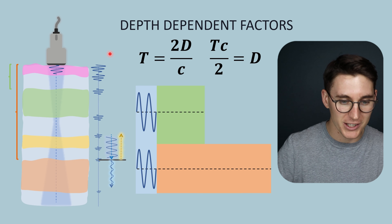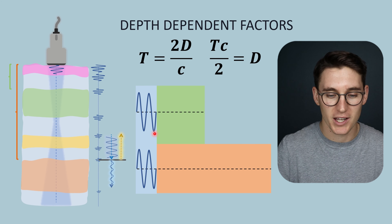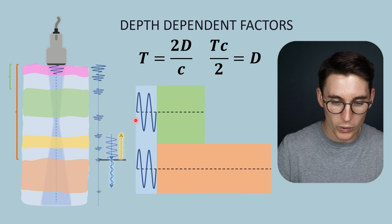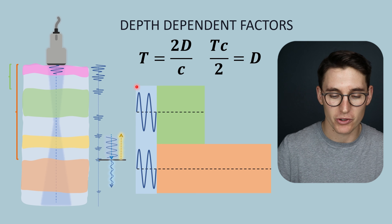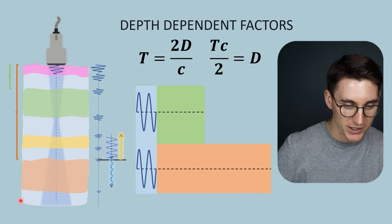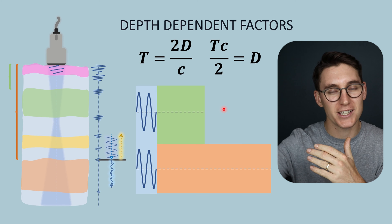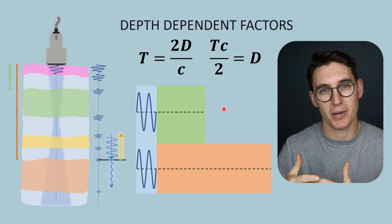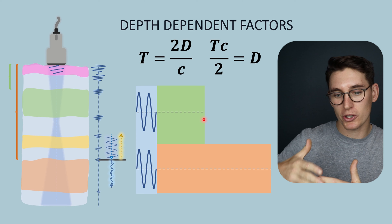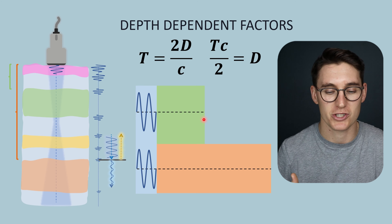Our pulse has both a transmit time and a receive time, and we cannot change the pulse duration — it is fixed. So if we want to image at a further depth within the patient, the only thing that we can change is the receive time: the amount of time that we wait to listen for those echoes to come back. We can't repeat another pulse until all of our echoes have come back, because that would cause interference with those returning echoes.